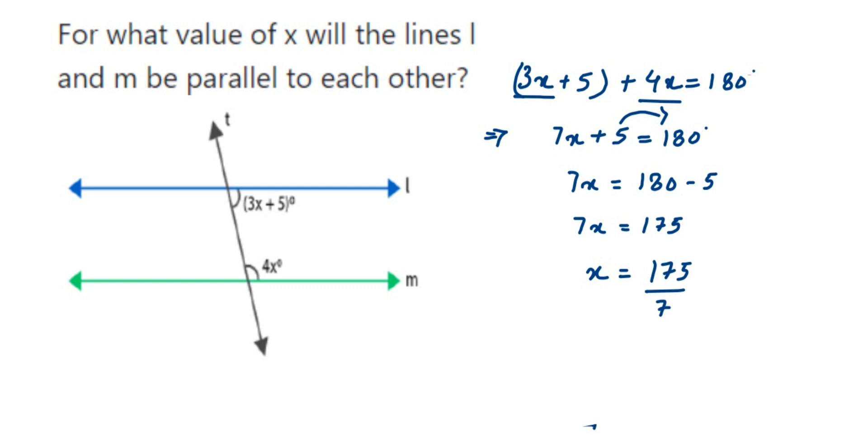Now calculating 175 divided by 7: 7 ones are 7, 7 twos are 14, with 3 remaining. That's 17 minus 14, 3 is the remainder. 3 combined with 5 makes 35. 7 fives are 35. Therefore, x is equal to 25.